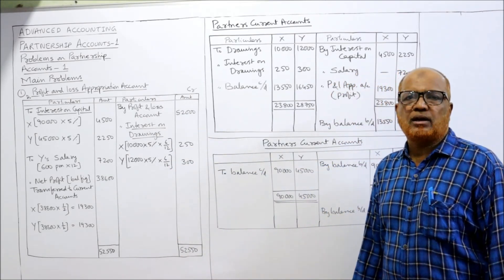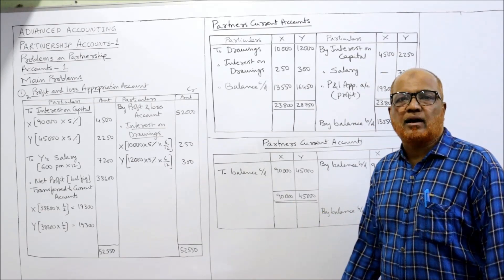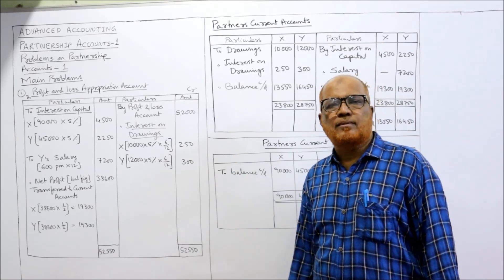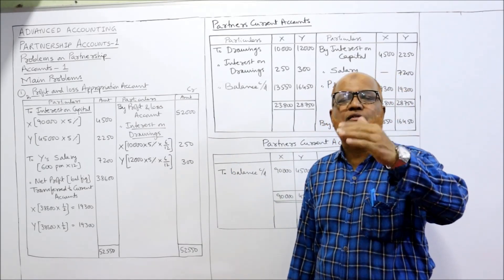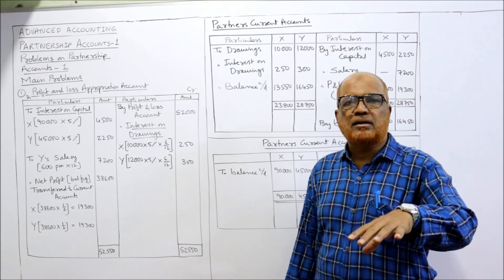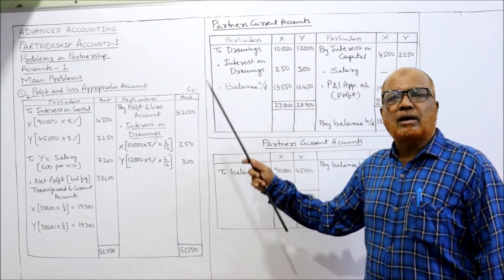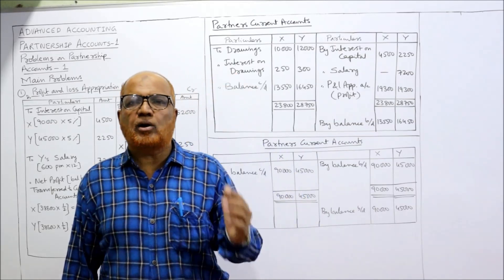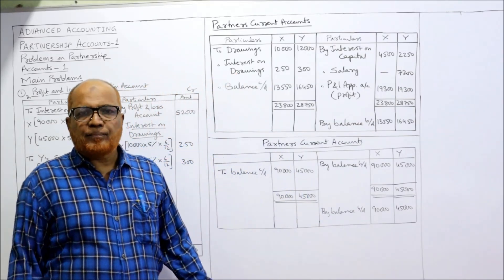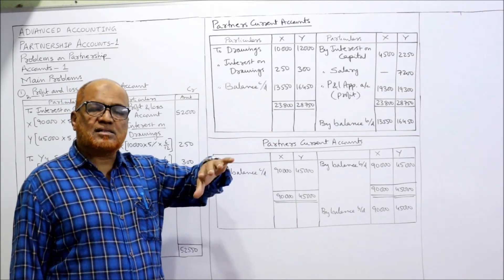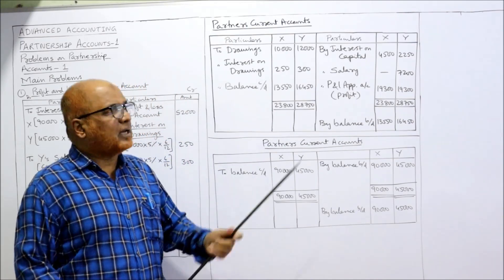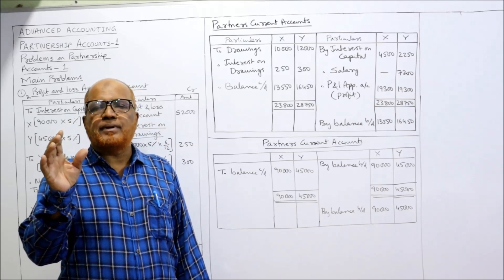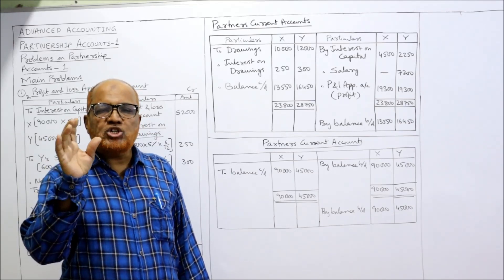Now we prepare the current account. All adjustments are taken in the partners' current account. Instead of preparing separate current accounts for X and Y, I combine both in one account with two columns on the debit side and two columns on the credit side — though you can prepare them separately if you prefer. On the credit side go: interest on capital, salary of the partner, and share of profit.